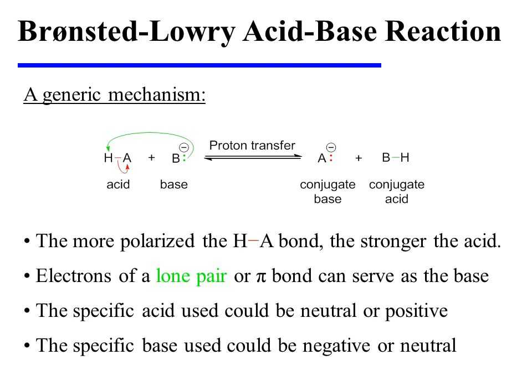In this generic mechanism, an acid HA is donating a proton to a base B⁻. The base is utilizing its lone pair of electrons to form a new bond to the proton being transferred. As a result, the pre-existing H-A bond is cleaving and those red electrons are falling onto A.